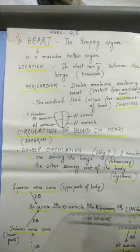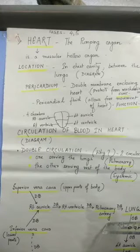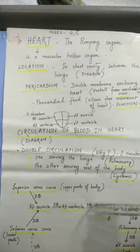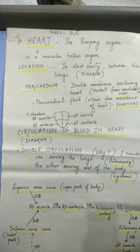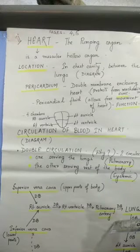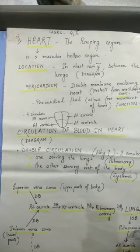From right ventricle, the blood goes to the pulmonary artery — that is the deoxygenated blood. Wherever DB is written, it is deoxygenated blood. The pulmonary artery arises from the right ventricle, so the blood from the pulmonary artery goes to the lungs. From the lungs, the blood is oxygenated and goes to the pulmonary vein.